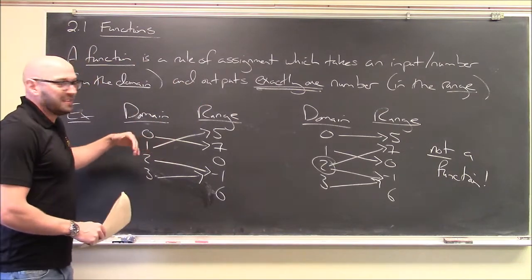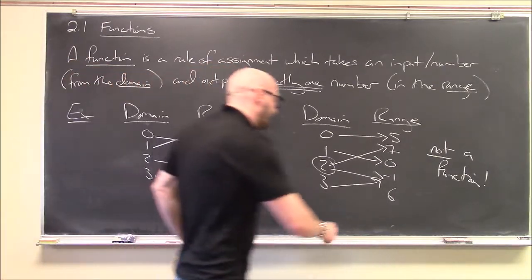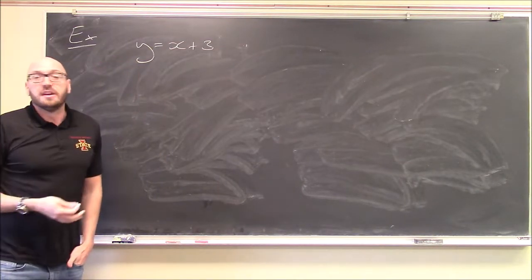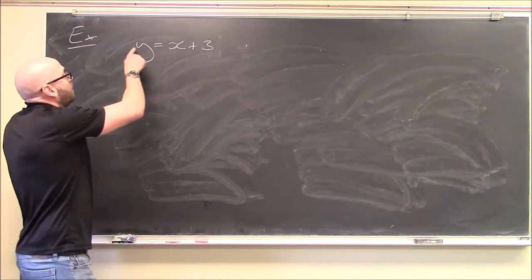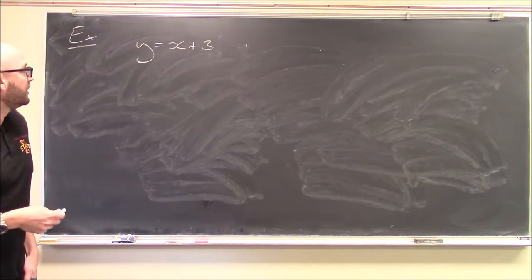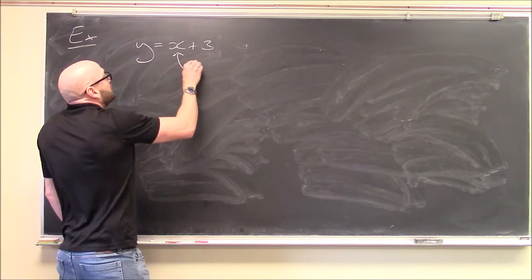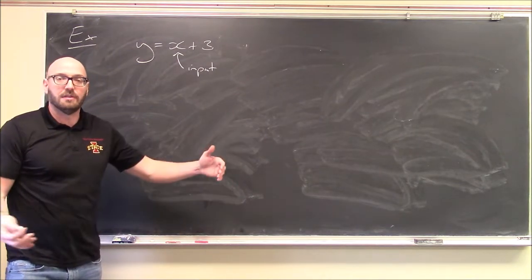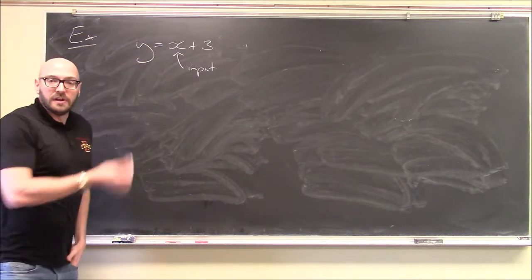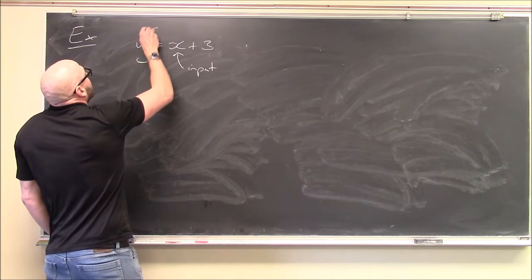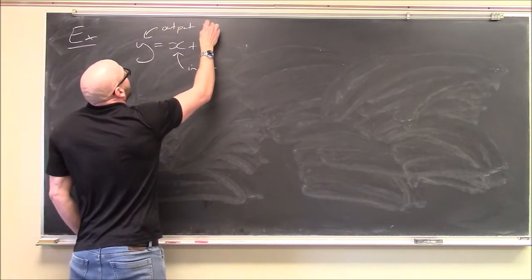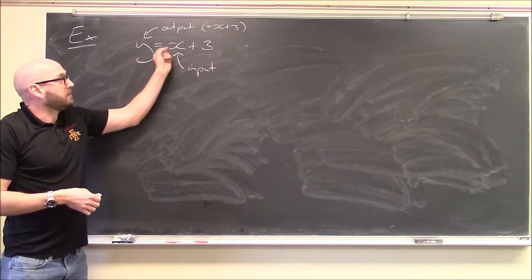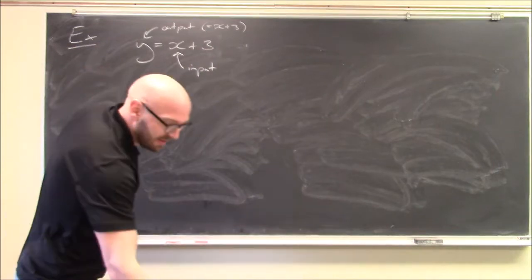We don't usually define functions tabularly — we use equations. Here's something from last time: the graph of the straight line y = x + 3, already in slope-intercept form. Here x is the input — you choose any real number you want, even √2 or π — and y is the output, equal to x + 3. You plug in x, you get out x + 3. This is a function.